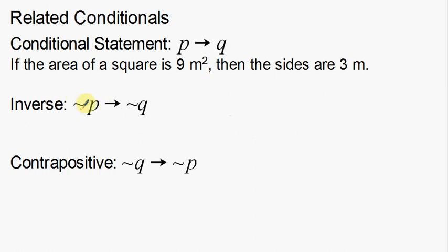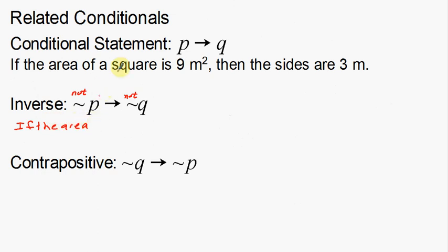The inverse is the 'not' statement — basically the opposite statement. These little symbols here mean 'not.' So it's not P then not Q. Basically I want to say the first part of the sentence is not true, and the second part is also not true. I just want to put 'not' somewhere in there to make that part of the sentence not true. Notice I'm not switching anything around this time — everything stays where it is. P stays in front, Q stays in front.